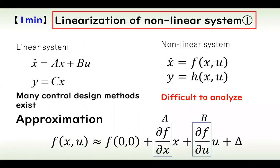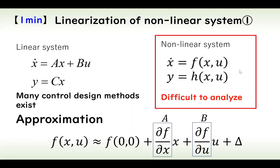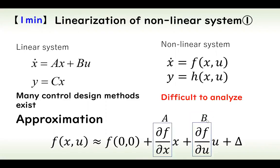In the case of a linear system, many control design methods exist. On the other hand, nonlinear systems are difficult to analyze, so in many cases the control system is linearized as a linear system. One method is approximation using Taylor expansion, by which we can identify the A matrix and B matrix factors.